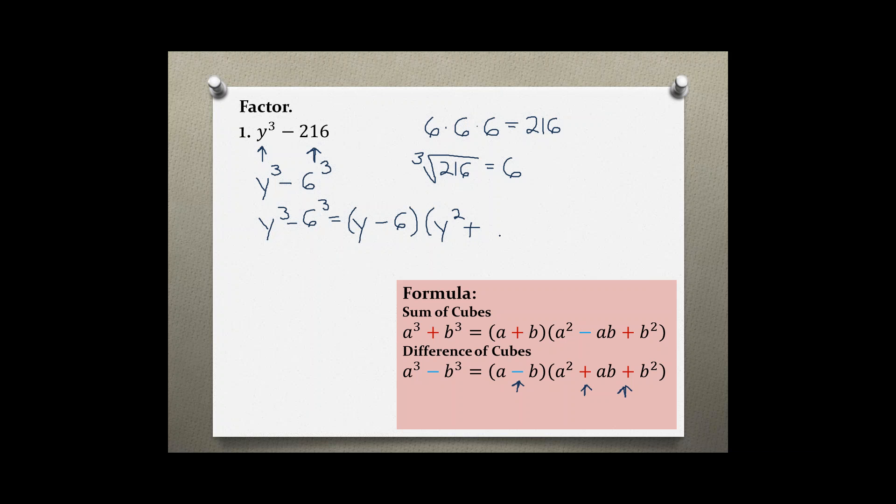That's y times 6, or 6y, then plus b squared, which is 6 squared—6 times 6 equals 36.